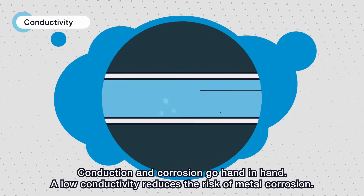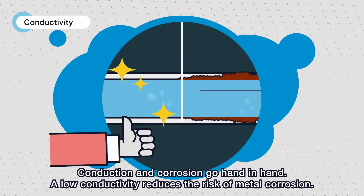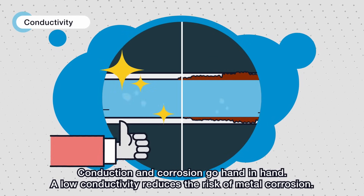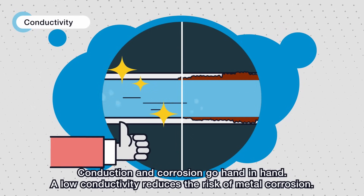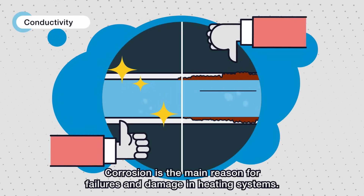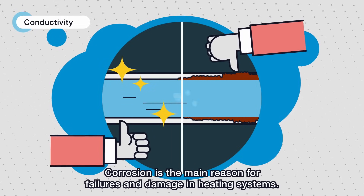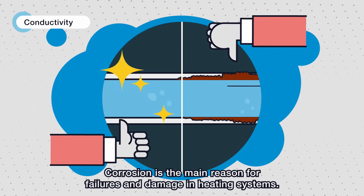Conductivity and corrosion go hand in hand. A low conductivity reduces the risk of metal corrosion. Corrosion is the main reason for failures and damage in heating systems.